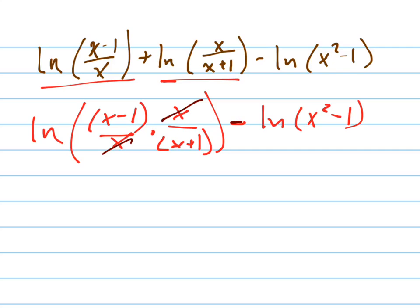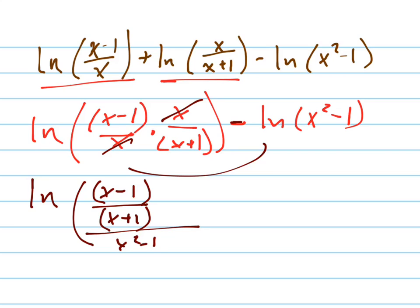And then we're going to divide this entire thing. We're going to combine these two together with the subtraction property. So the natural log of x minus 1 over x plus 1 all over x squared minus 1.